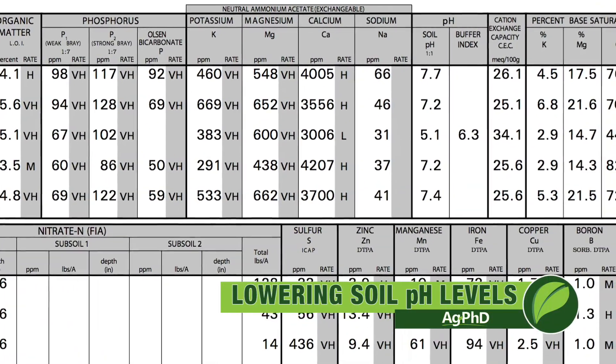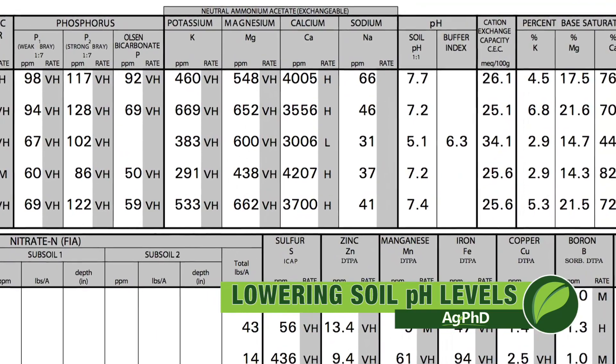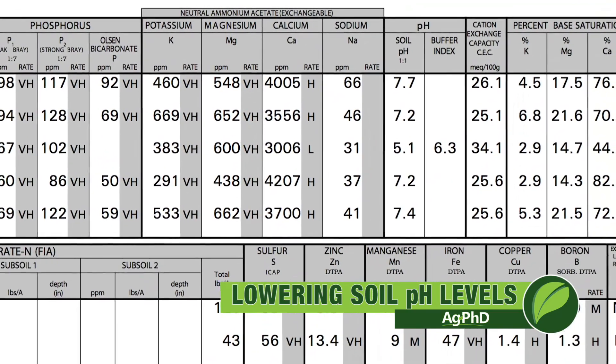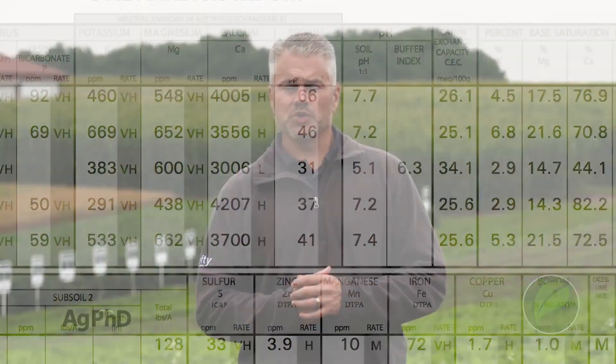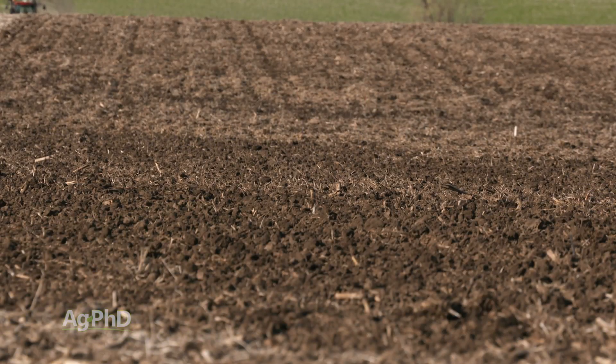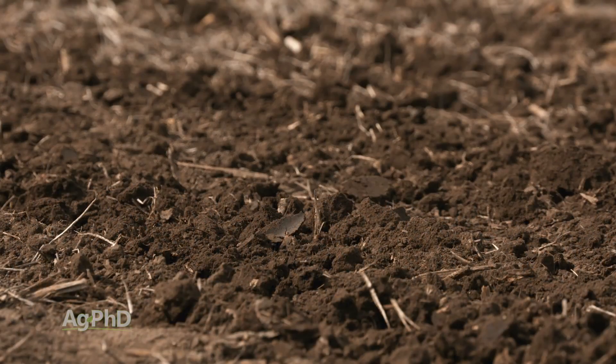If you're raising corn, soybeans, and wheat, the ideal pH, they say, is around 6.3 to 6.8. Let's say that your soil pH is 7.5, maybe it's 8, maybe even 8.5. How can you take that high pH soil and get it down into the ideal range? A lot of people may have told you, 'Oh, you can't do it,' but that's ridiculous — you absolutely can.